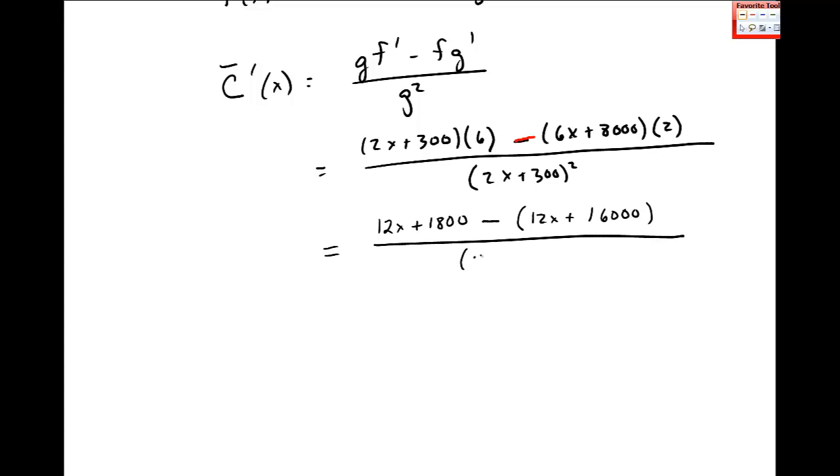But I'll leave the denominator as is, 2x plus 300 quantity squared. And then distribute this minus sign, minus 12x and minus 16,000, over 2x plus 300 squared.